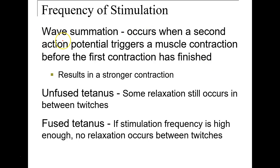With twitch contractions we have wave summation: if a second action potential triggers another muscle contraction before the first one is completely finished, we result in a stronger contraction. Unfused tetanus is when some relaxation occurs between action potentials, but for the most part the muscle stays contracting.